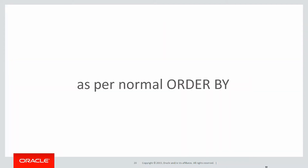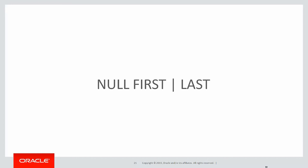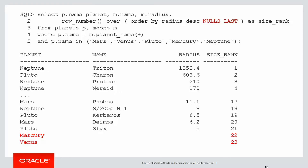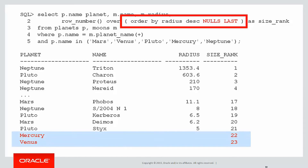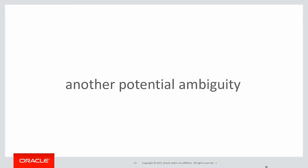We solved that using the same syntax as we use with a normal ORDER BY: we have the NULLS FIRST and NULLS LAST option. So let's rerun our query — and as you can see, by adding ORDER BY radius NULLS LAST we've solved the problem. We have the more intuitive answer: Neptune's big moon Triton, with a radius of 1353, is the one that gets ranked first. Our two planets that don't have any moons, Mercury and Venus, have come out last — which is probably what we were after.